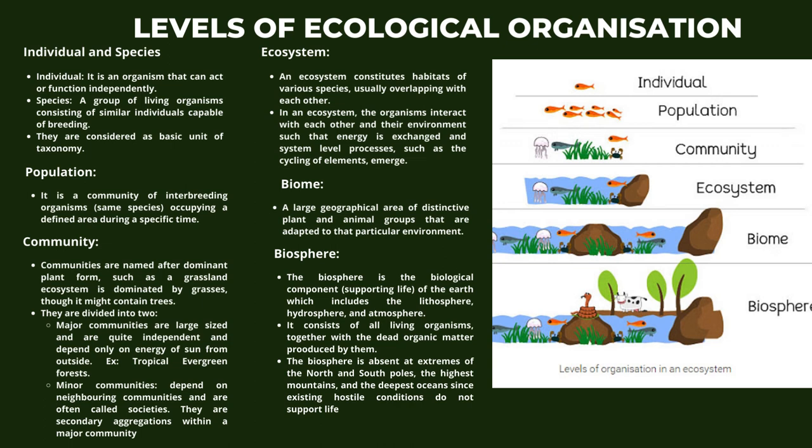Next comes community, where communities are named after the dominant plant form — such as a grassland ecosystem, which is dominated by grasses, though it might contain trees — and are divided into major communities and minor communities. Next is the ecosystem, where an ecosystem constitutes habitats of various species, usually overlapping with each other. Organisms interact with each other and their environment such that energy is exchanged and system-level processes, such as the cycling of elements, emerge.